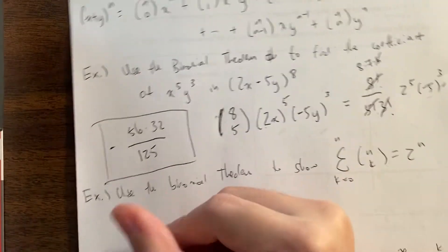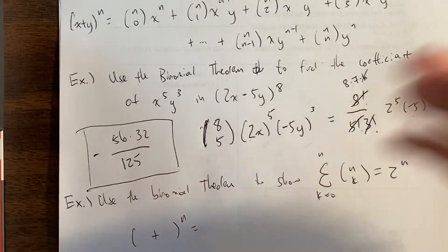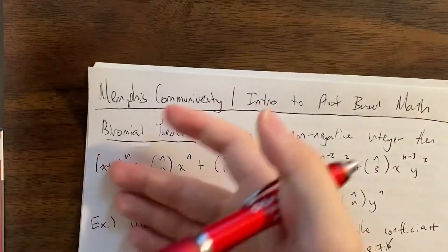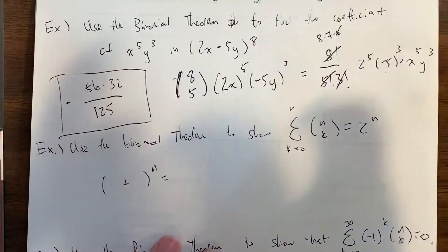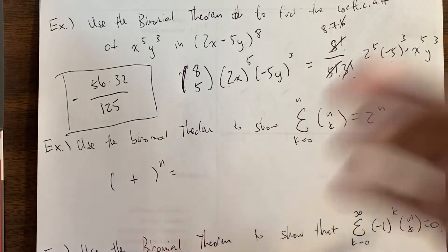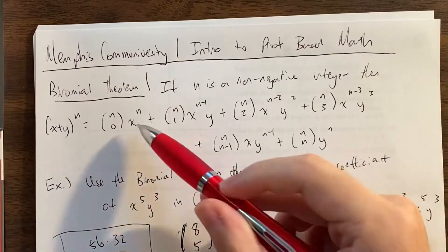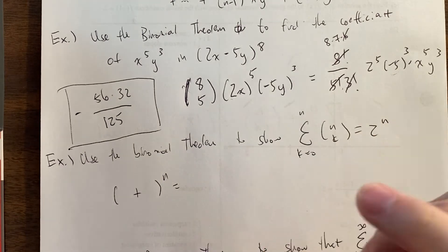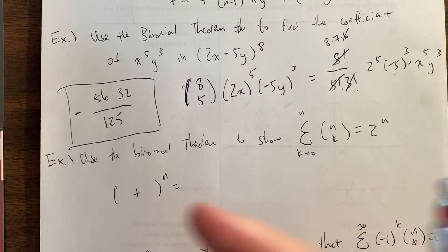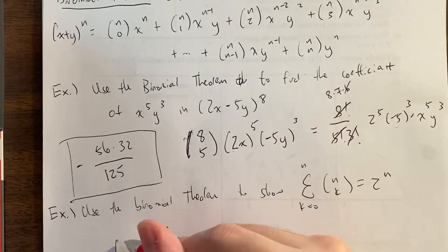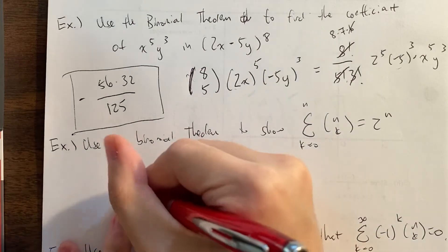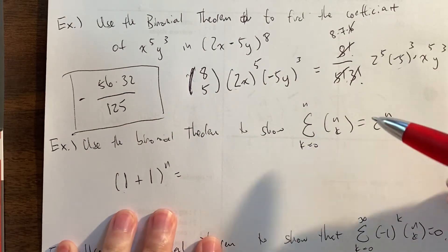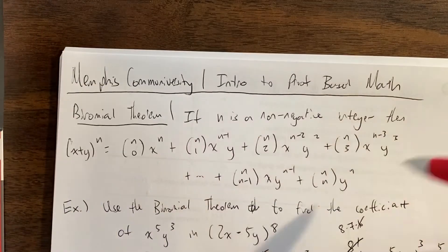We're going to expand (something + something) to the n and hope that it's obvious what the sum will be. Since neither side has x's and y's, we'll use numbers. Any number we plug in will need to be raised to unknown powers, so we should use numbers whose powers we know well — like 1, since 1 to anything is 1, or negative 1, or 0. I'll argue we should plug in x = 1 and y = 1, because conveniently 1 plus 1 equals 2.